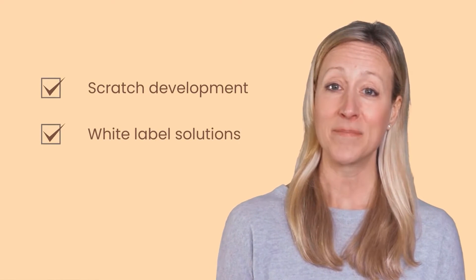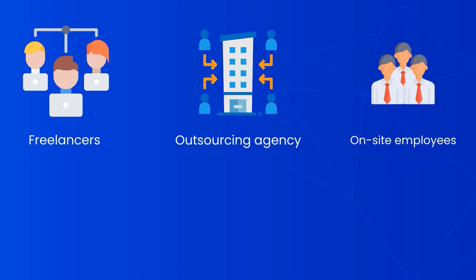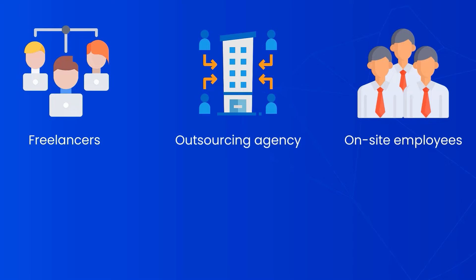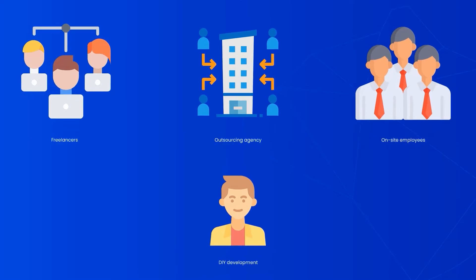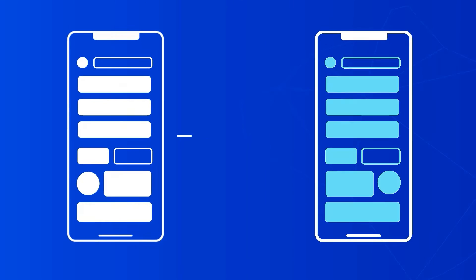With our years of experience in app development, we have found that there are two major ways to develop an application: development from scratch and white label solutions. You can develop an application from scratch by hiring an experienced app development team — freelancers, outsourcing agency, or on-site employees. Another way is going for white label solutions. Most app development companies have readymade codes and designs available for highly demanded apps. All one needs to do is change the UI, and their hotel booking app is ready to go.